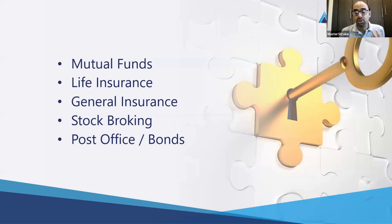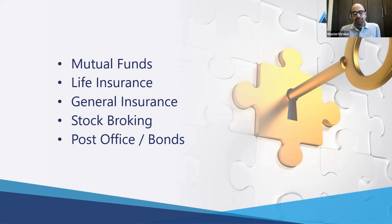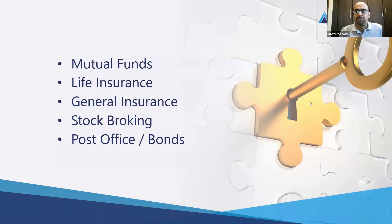then you have to decide which is going to be your main area of operation. Once you have decided you want to become a mutual fund distributor — and since this program is for mutual fund distributors, I am pinning down the options to that one — when you become a mutual fund distributor you have many product options: mutual funds, life insurance, general insurance, stockbroking, post office bonds, and so on. The key part is you have to decide which of these areas to focus upon. You can sell all these products, but you have to decide which one area is going to be the main area of your business.